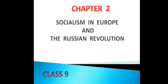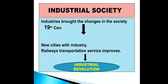Open your history book page number 26, second point: industrial society and social change. In the 19th century, society was changing. The change was basically socio-economic change. It was a time when new cities came up and new industrialized regions developed. Railways expanded, which helped to improve transportation, and industrial revolution occurred. Industries brought changes in society — so the industrial revolution started.